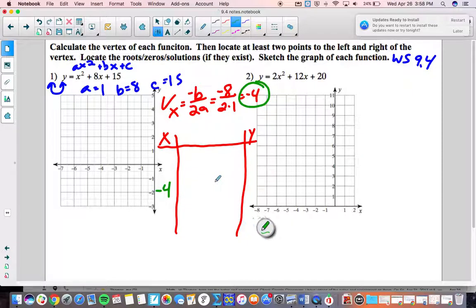How we find our y value of our vertex coordinate is plug our x value in for x in the function. So we'll go negative 4 in parentheses. When we substitute we put parentheses around what we're plugging in, plus 8 times negative 4 plus 15. In your calculator use those parentheses. If you don't you'll get a different answer. You should be getting negative 1.